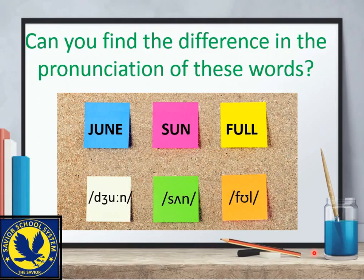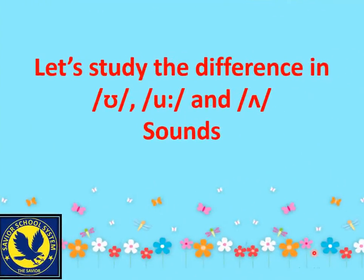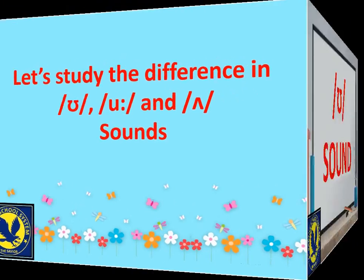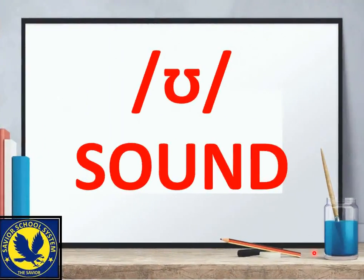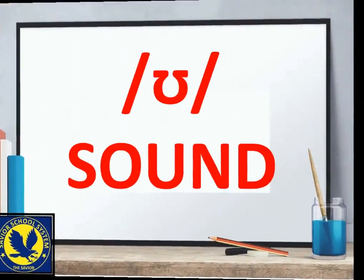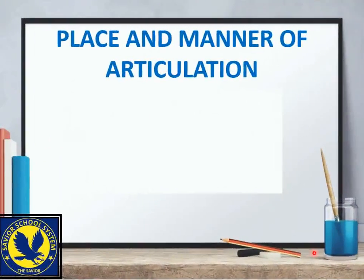If you observe, these three words carry three different vowel sounds. The first one is the oo sound, the second one is ʌ, and the third one is ʊ. These sounds are represented by specific symbols. This is ʌ, this is uː — the long vowel — and this is ʊ, the first sound which is used in 'full'.